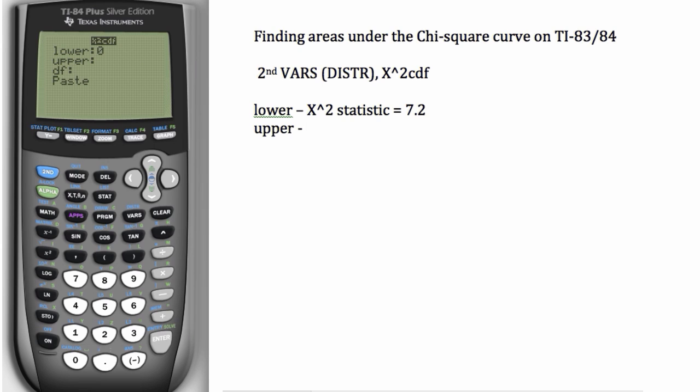And our upper bound, because we're always trying to find the probability of a value this extreme or this different from expected, we always want the right-hand tail of the chi-squared curve. So our upper bound will be some large number, maybe 100.